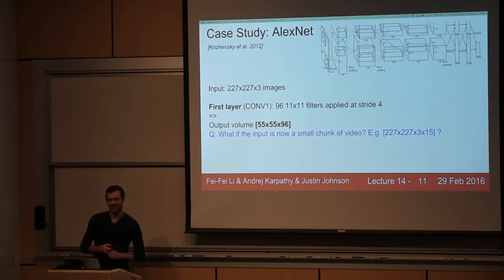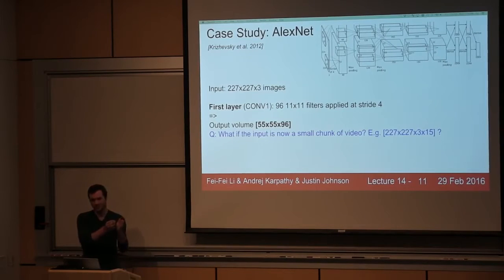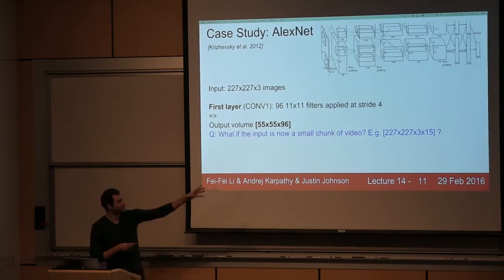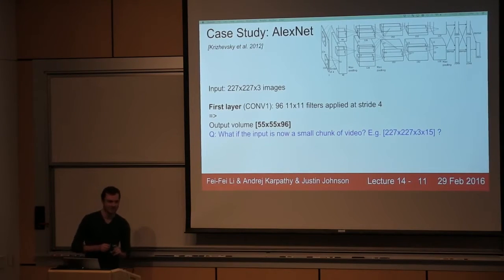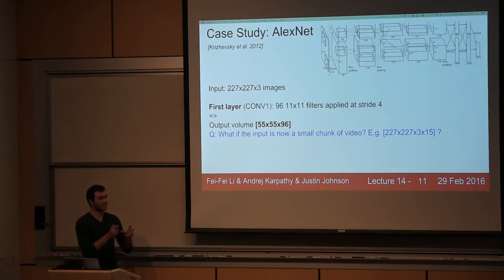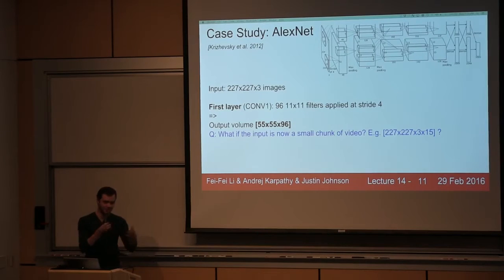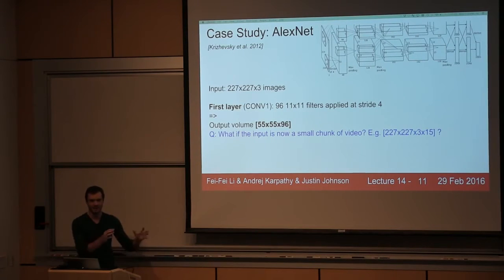Another idea: could you tie an LSTM into it? We'll get to methods that do that. Another suggestion was to stack frames as channels — similar to how you do RGB — giving you 45 channels effectively, and you could put a ConvNet on that. The issue is you'd want to share parameters across different time frames for each convolutional filter, because things in one time frame are probably similar to another time frame. So you want the same kind of property of sharing weights in time as well as in space.